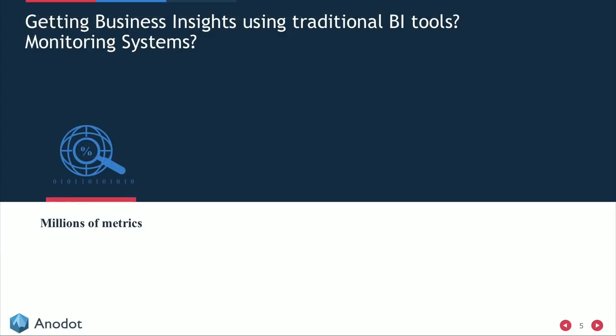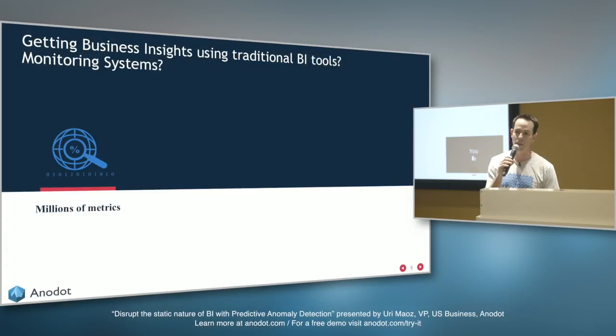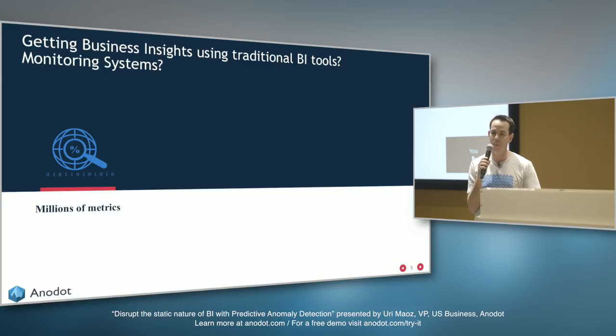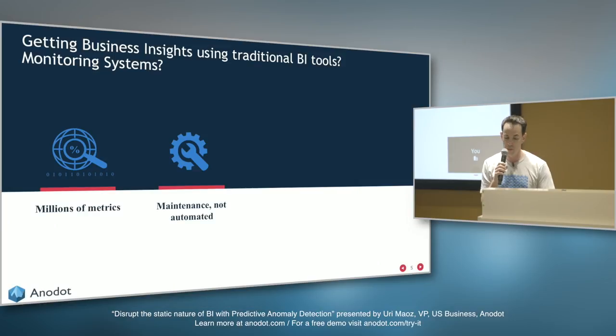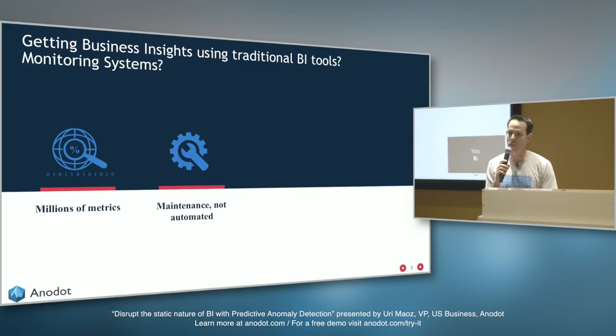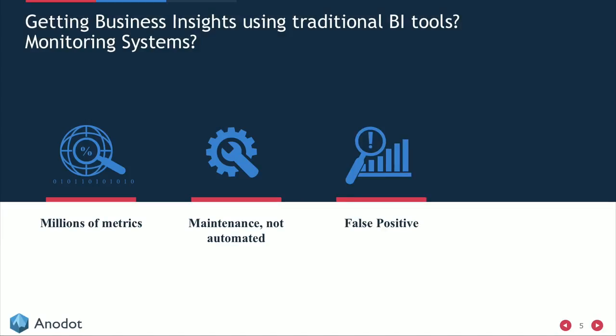First, we're talking about millions of metrics. Companies collect a lot of data, but they cannot track millions of metrics by building millions of dashboards. So they compromise — they build dashboards only for metrics they think are important, but lose a lot of important insight on what they're not tracking. For the metrics they do track, there's a lot of maintenance and unautomated process — armies of people developing reports and dashboards that are very hard to maintain.